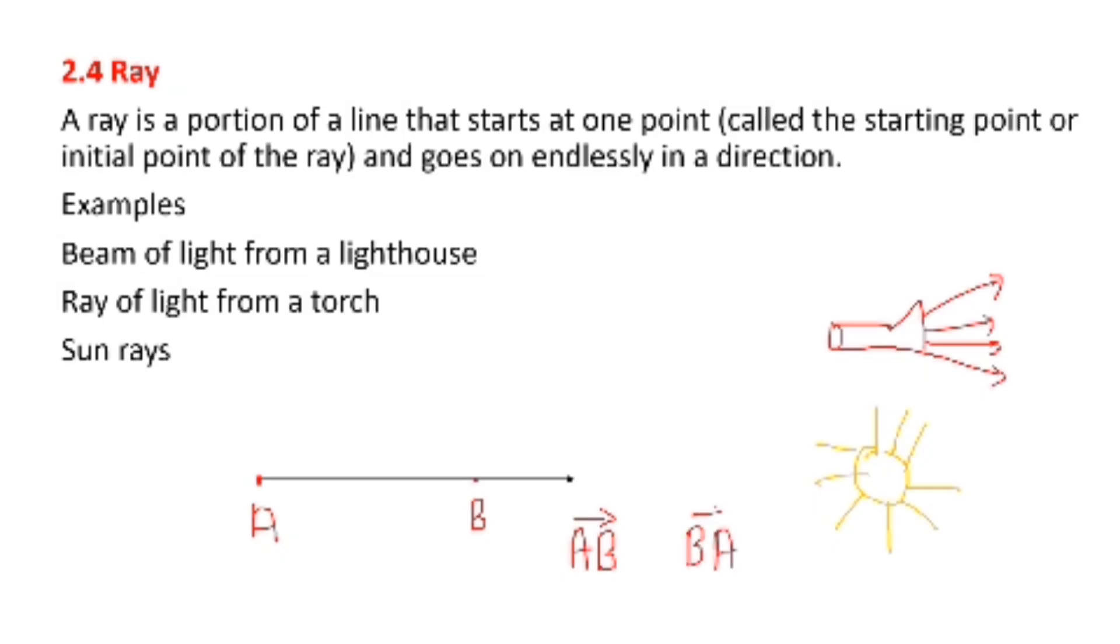If you write it as BA, that is not correct because this is not the starting point. We always write the starting point first which is A here in this case. So A and then moving towards B. So A, B.